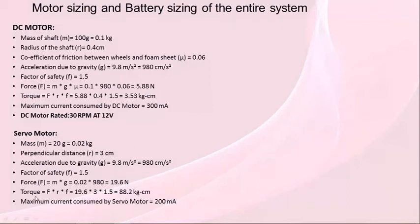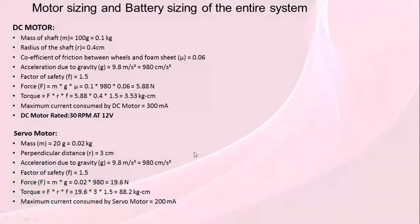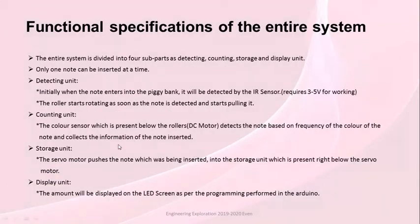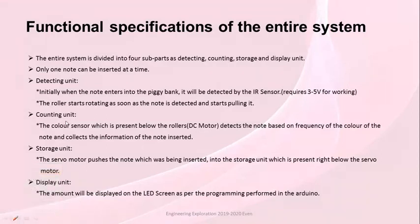This is the function specifications. We have mainly made four types: detecting unit, counting unit, storage unit, and displaying unit. These are the four function supports we have made for our project. In the detecting unit, the note enters and the sensor detects it; in the counting unit, the roller starts rotating, along with some other parts.